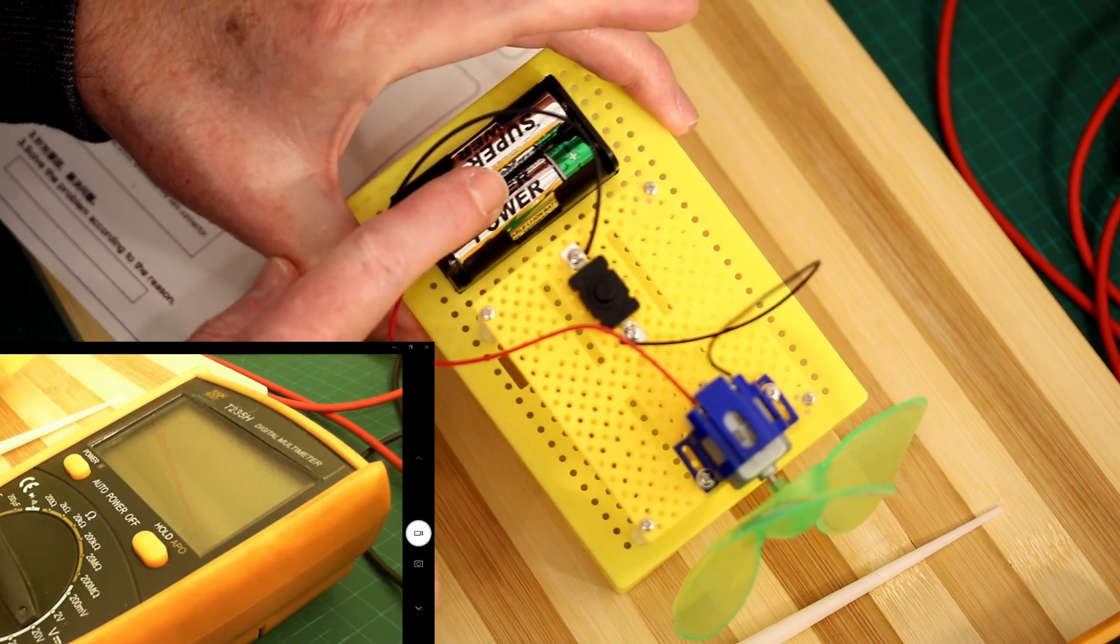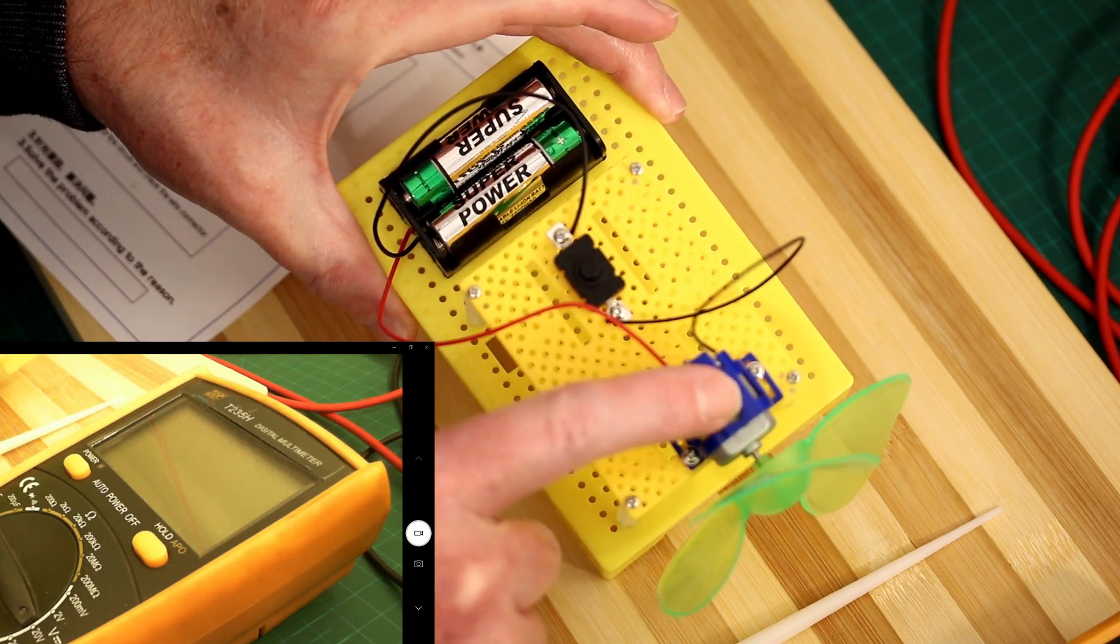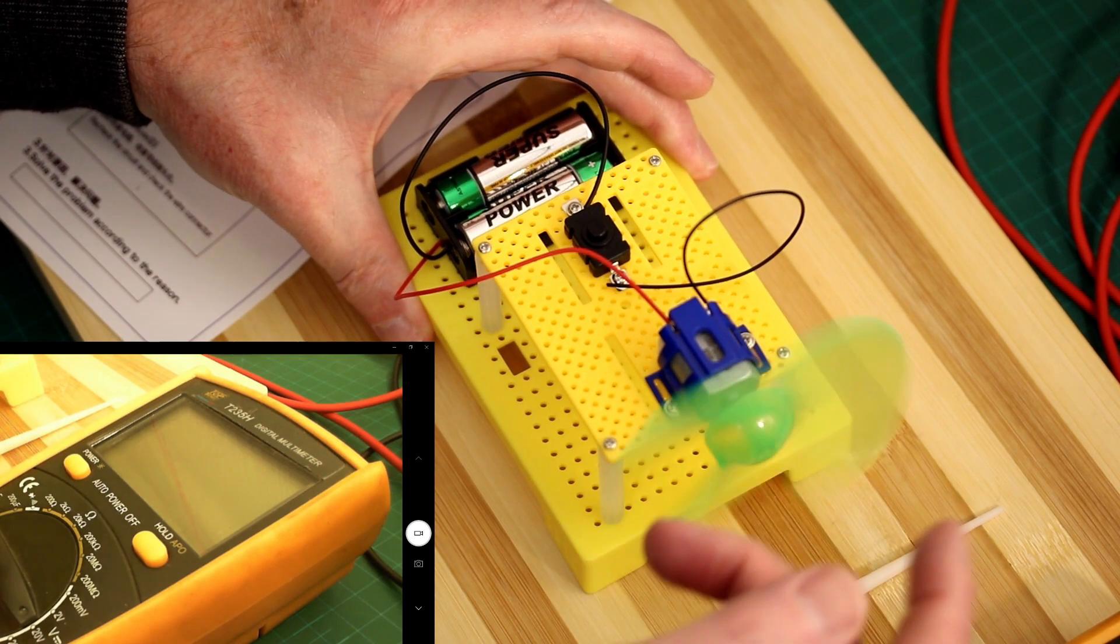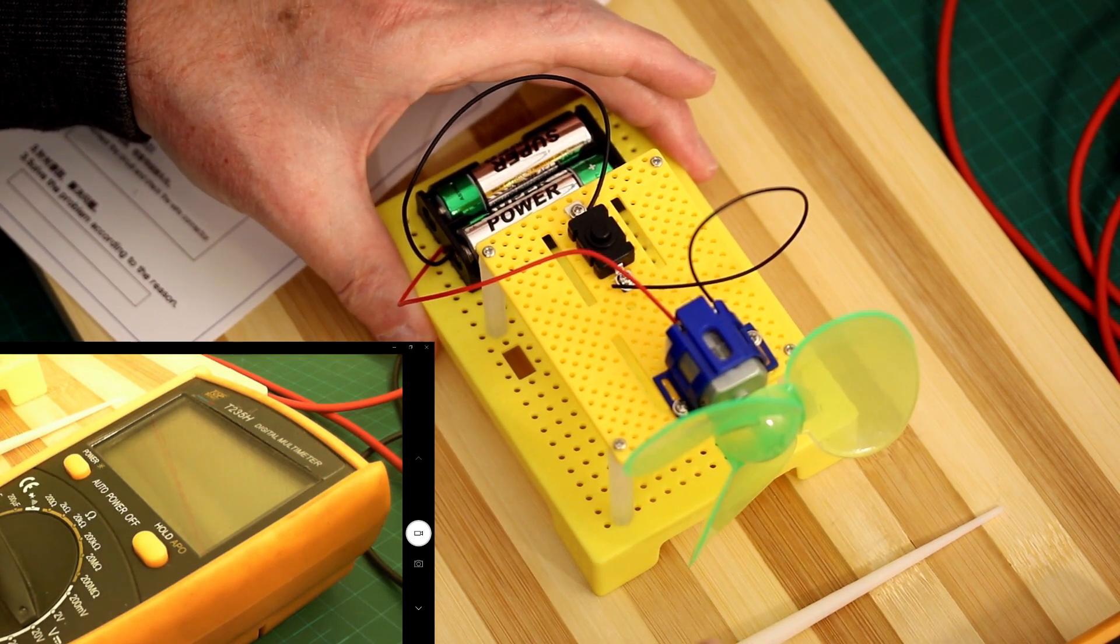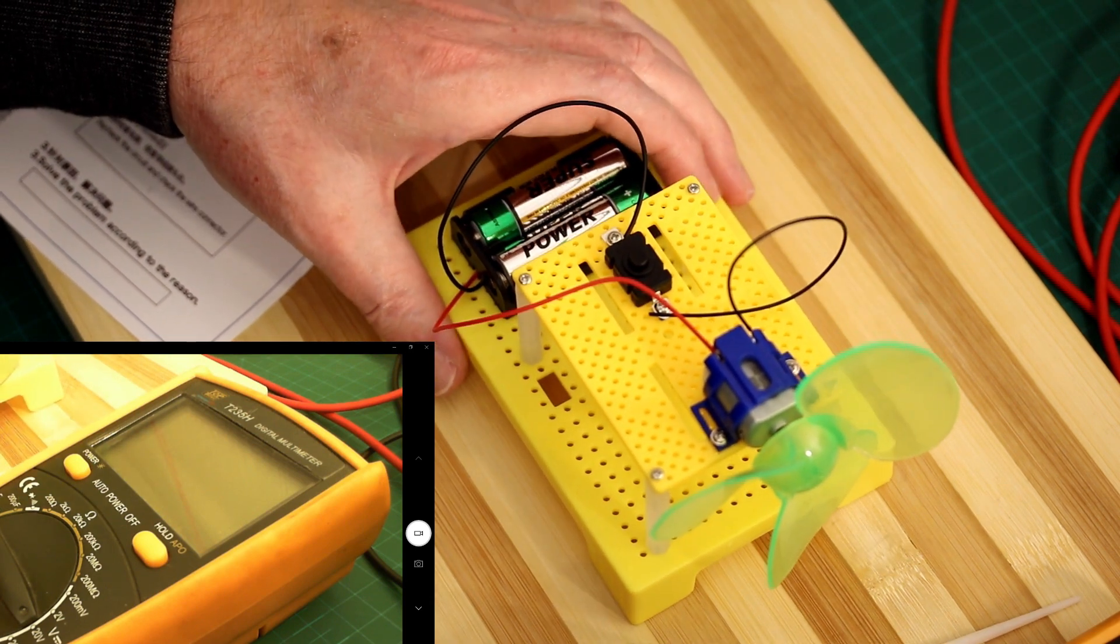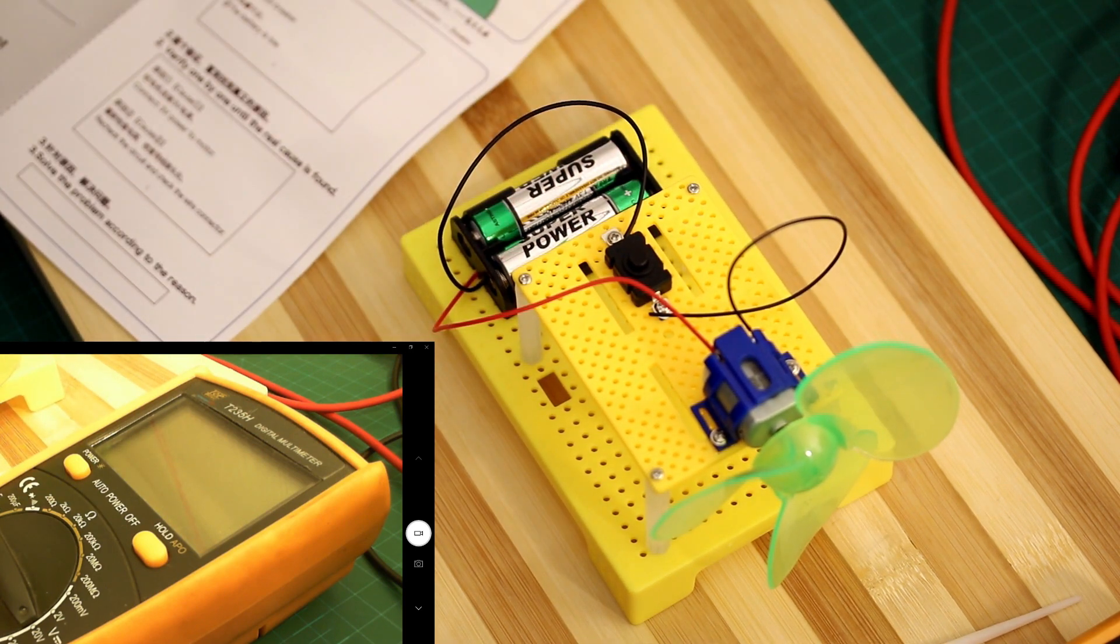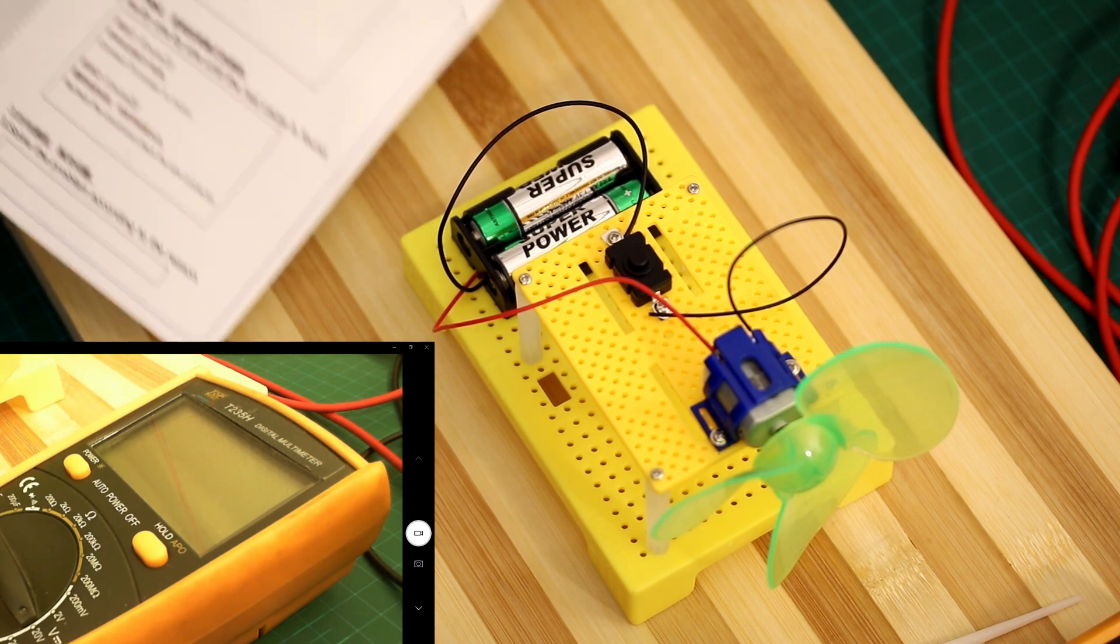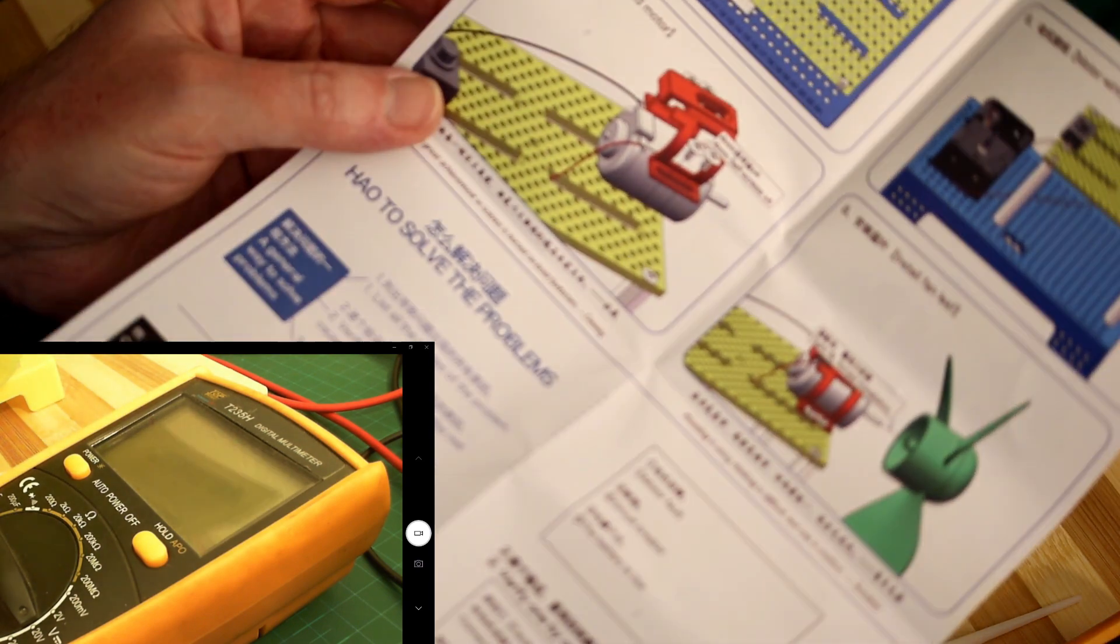So you've got your batteries, you've got a switch, got an electric motor, and got the fan blade fitted to the motor. This took me about half an hour to assemble. This is a very straightforward little kit.